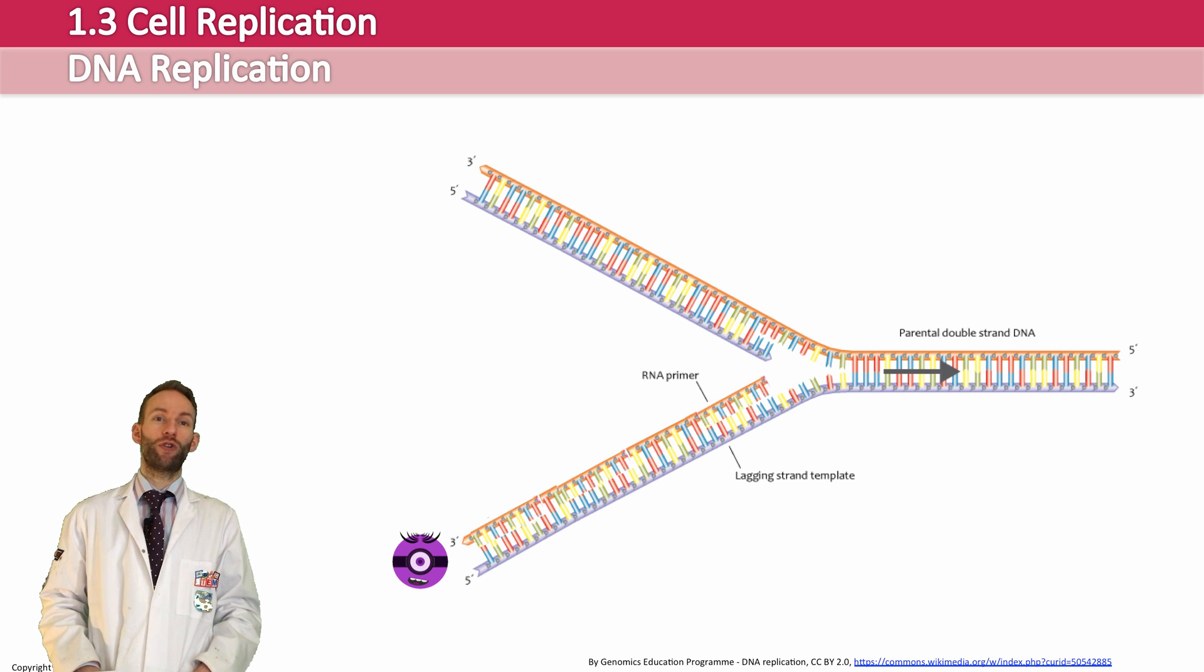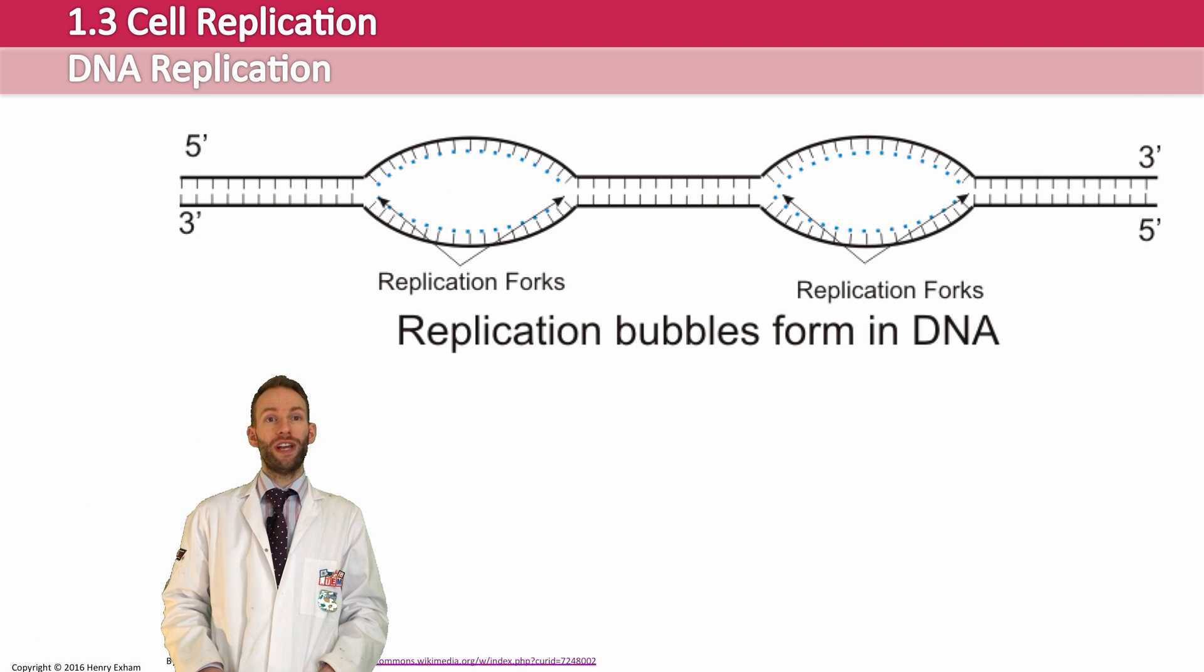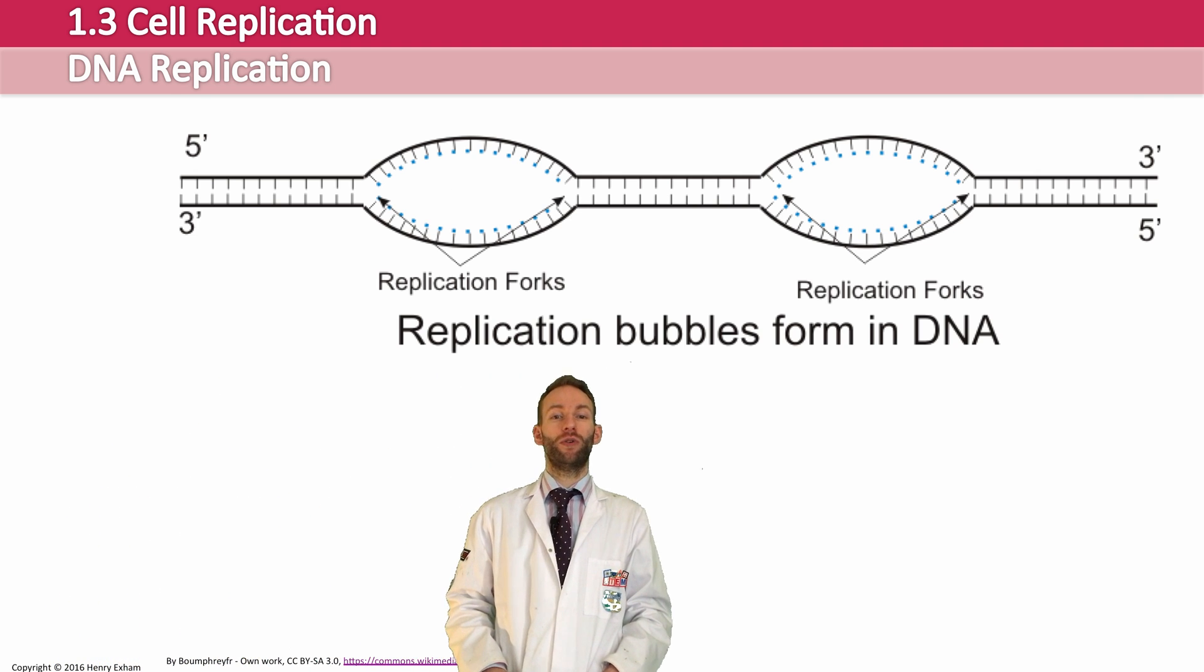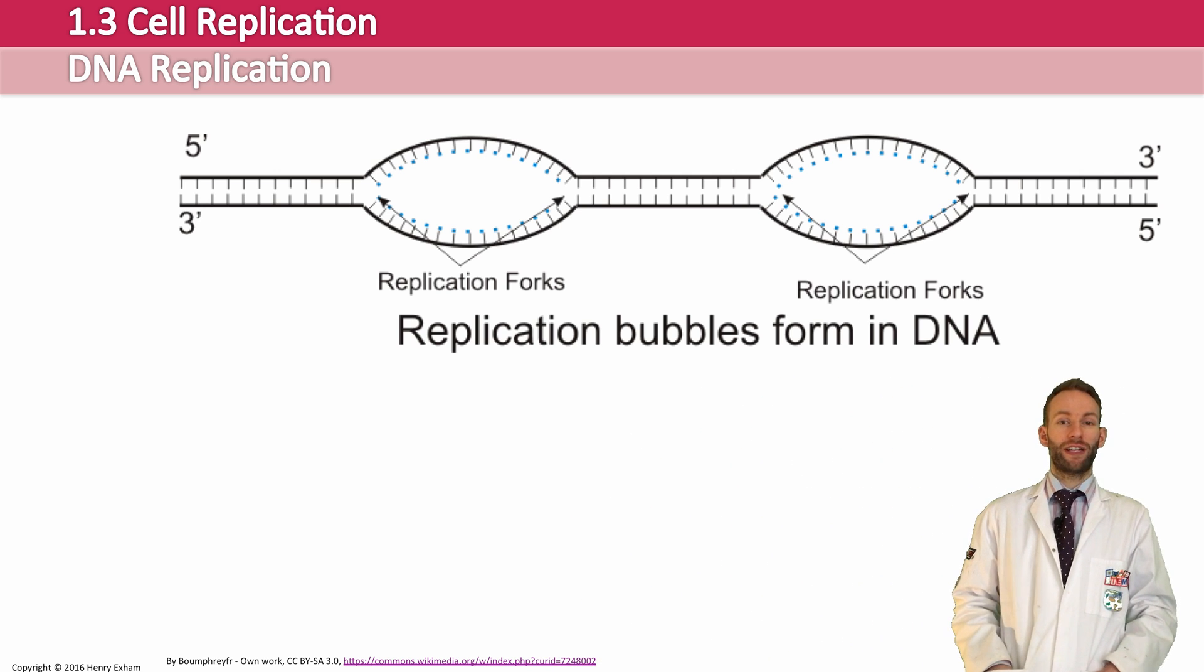Now, this doesn't just happen at one end of the chromosome and work its way along to the other end of the chromosome. That would be a bit too slow. It actually happened throughout the molecule in various areas, which we call replication bubbles. And the forks work in opposite directions. And once it happens in all the different bubbles, it will just join up and the whole chromosome will be replicated.